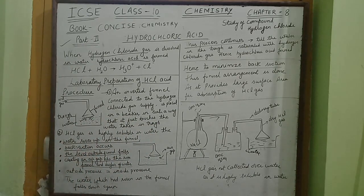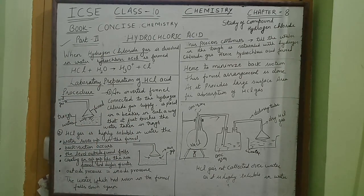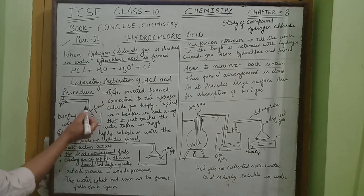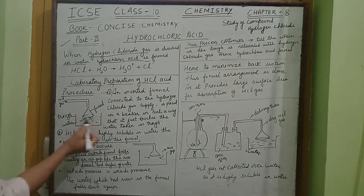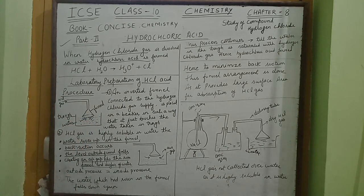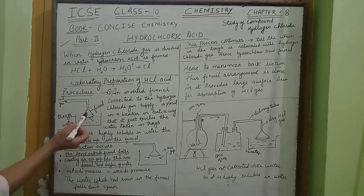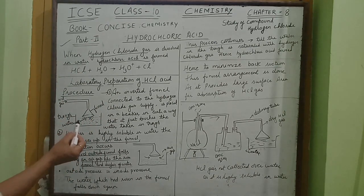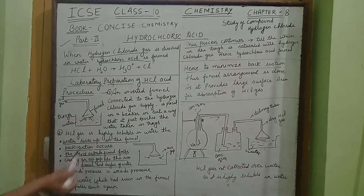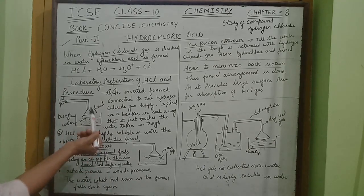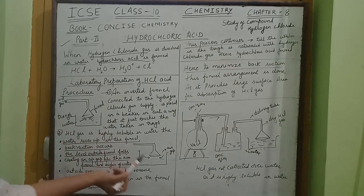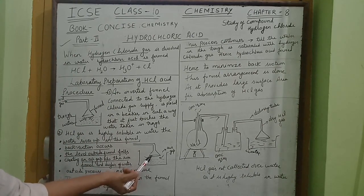Hydrogen chloride gas is highly soluble in water. The water rises up in the funnel. When the hydrogen chloride gas touches the water, it dissolves readily and gets converted to hydrochloric acid. During this process, back suction occurs — the water rises up inside the funnel while the level outside the funnel falls, and a gap is created between the funnel and the water.